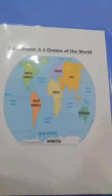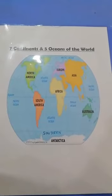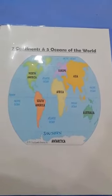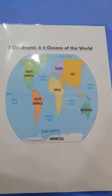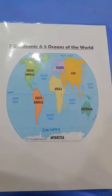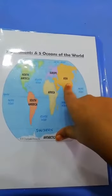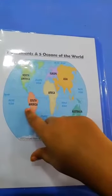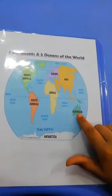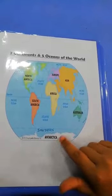Today we will learn about seven continents, five oceans of the world. Let's start with the seven continents: North America, Europe, Asia, Africa, South America, Australia, Antarctica.